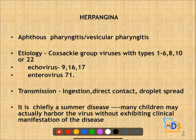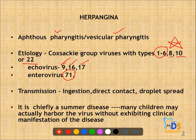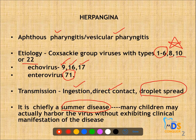The first infection is herpangina. Herpangina presents with the most important manifestation, hence it is also called as aphthous pharyngitis or vesicular pharyngitis. It is caused by Coxsackie group A viruses like types 1 to 6, 8, 10 or 22, and other echoviruses like 9, 16 and 17 can cause herpangina. Enterovirus 71 is also an etiological factor. Transmission may be through ingestion, direct contact or droplet spread. It is mostly a summer disease occurring in children.